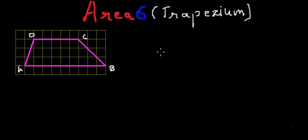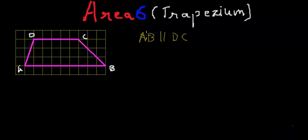As you can see, I have already drawn one trapezium on the grid and I have named it ABCD, where AB is parallel to DC. And what do we mean by parallel lines? If two lines are parallel, the distance between them will remain constant. So even if we extend the lines DC and AB, the gap between them is going to remain the same. That is the definition of parallel lines, and here in this trapezium DC is parallel to AB.